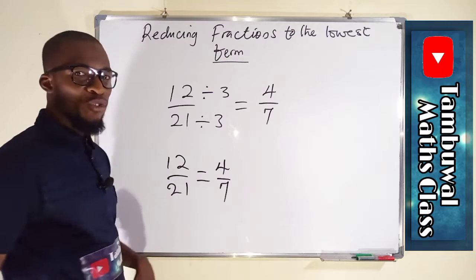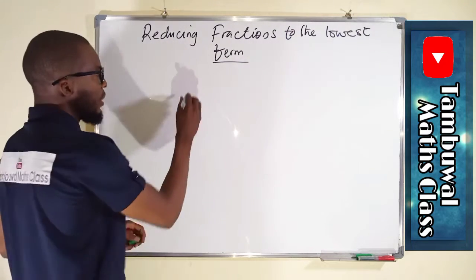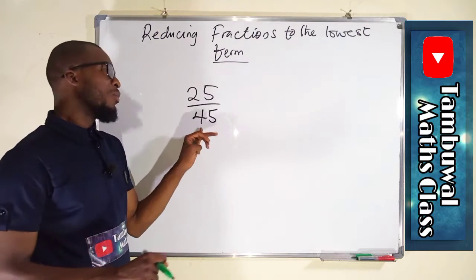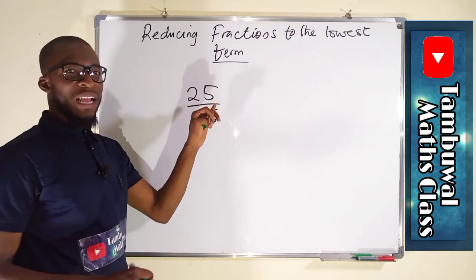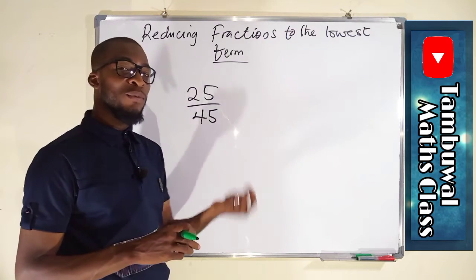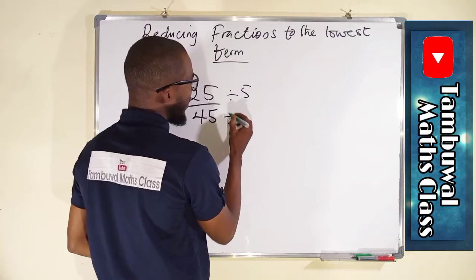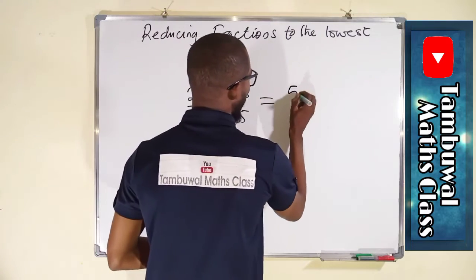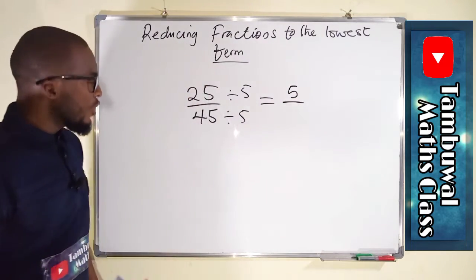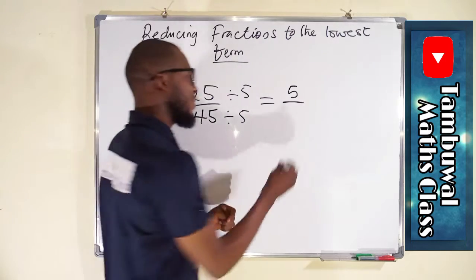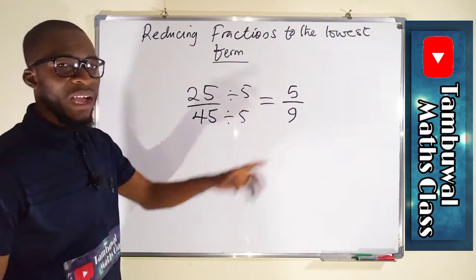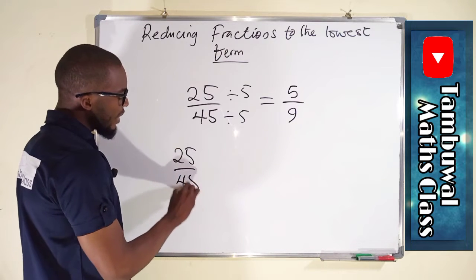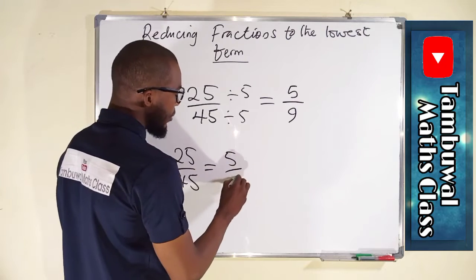Let us take another one: 25 over 45. Both numbers end with 5, and any number ending with 5 is divisible by 5, so we divide both by 5. 5 into 25 is 5, and 5 into 45 is 9. Since 5 and 9 have no common factor, we stop and conclude that 25 over 45 equals 5 over 9.